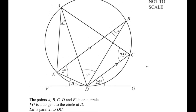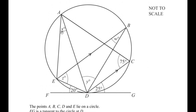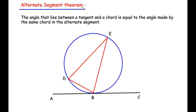In the figure we can see that we are supposed to find the values of W, X, Y and Z. Let us begin by finding the value of W first. For that we are going to make use of a circle theorem which is the alternate segment theorem. It states that the angle that lies between the tangent and a chord is equal to the angle made by the same chord in the alternate segment.